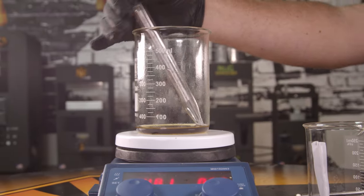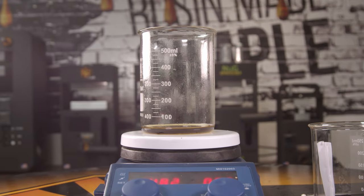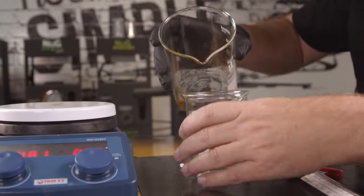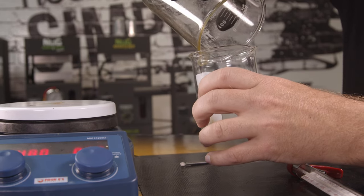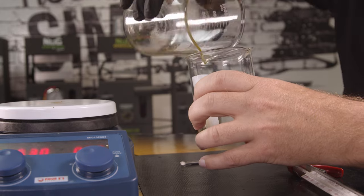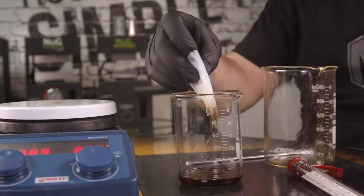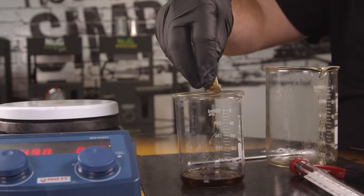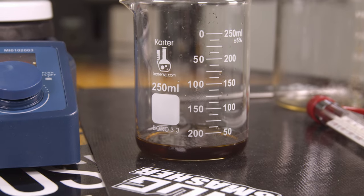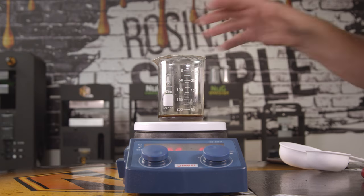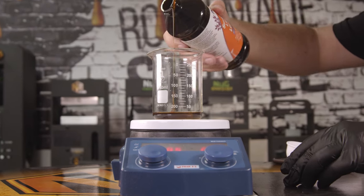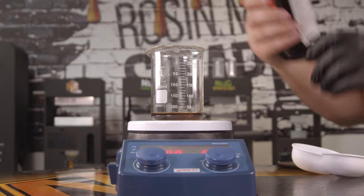Go ahead and strain your oil through a 37 micron bag. Next, we'll add a teaspoon of sunflower lecithin and mix that all together.